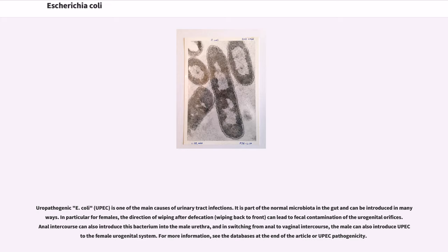Uropathogenic E. coli is one of the main causes of urinary tract infections. It is part of the normal microbiota in the gut and can be introduced in many ways. In particular for females, the direction of wiping after defecation can lead to fecal contamination of the urogenital orifices. Anal intercourse can also introduce this bacterium into the male urethra, and in switching from anal to vaginal intercourse, the male can also introduce it to the female urogenital system.